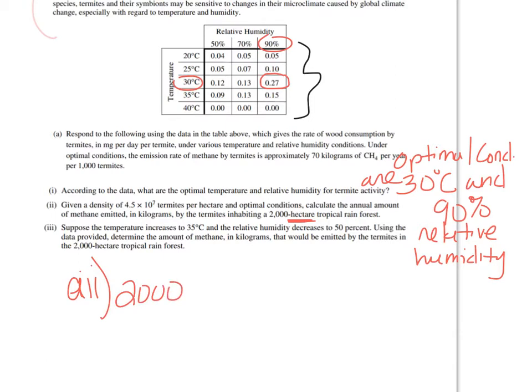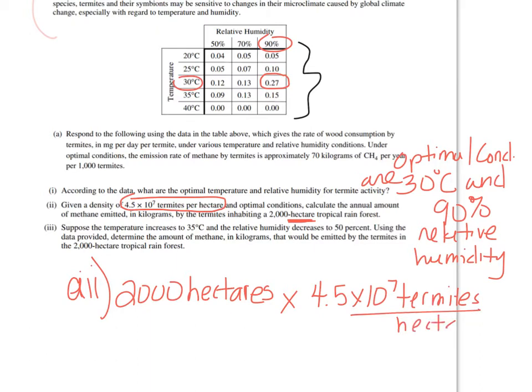So let's start with that number. 2,000 hectares. Sometimes it's abbreviated as HA. And one of the givens that we have is that there's this many termites per hectare. So we're going to use this number. So what else do we need? We want the annual amount of methane. So where does it tell us our methane? It looks like it tells us our methane right here. 70 kilograms of methane per 1,000 termites.